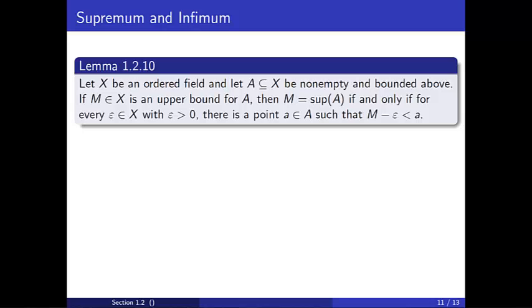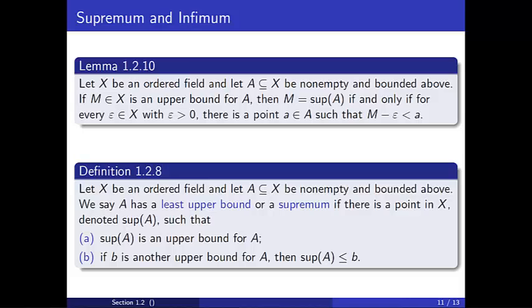First, notice that this is an if and only if statement. We'll prove this lemma during class, but let's think about what it's saying. Notice the first part of the definition of supremum is part of the hypothesis of the lemma. So the conclusion of the lemma provides an alternate characterization for the second condition of the definition of supremum. An upper bound M is a supremum if no number less than M is an upper bound for A.